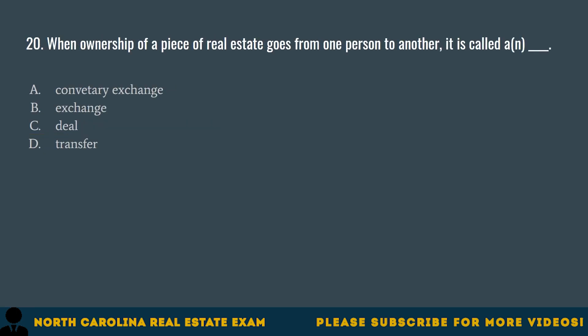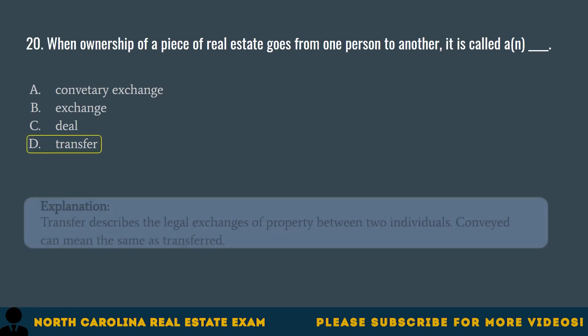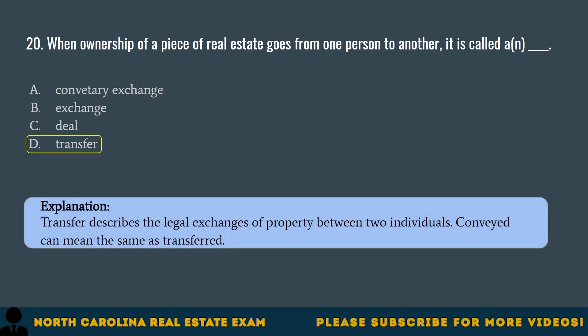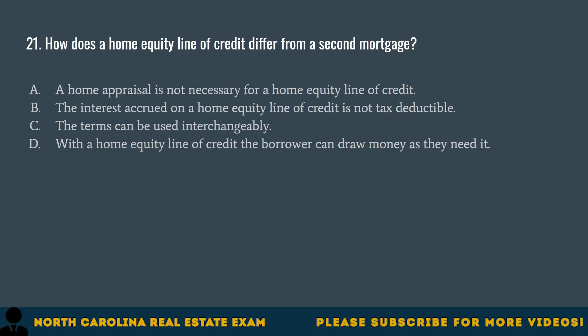Question 20. When ownership of a piece of real estate goes from one person to another, it is called a A. Conventary exchange. B. Exchange. C. Deal. D. Transfer. The correct answer is D. Transfer. Transfer describes the legal exchange of property between two individuals. Conveying can mean the same as transferred.